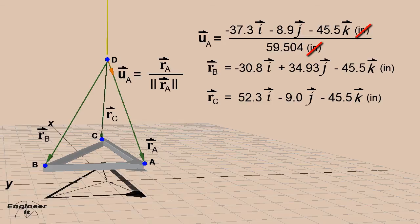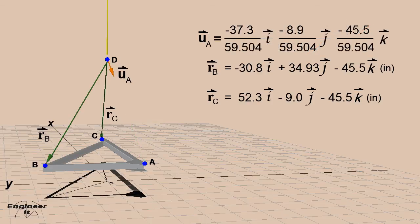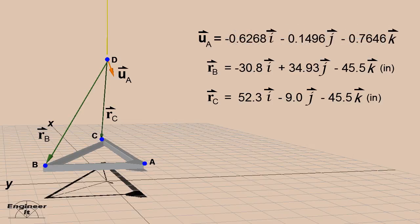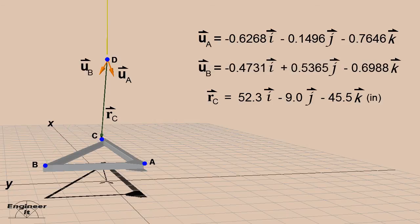Notice that the units cancel, leaving the unit vector without units. That's normalizing. Now, calculate values for the direction cosines and normalize vectors RB and RC.